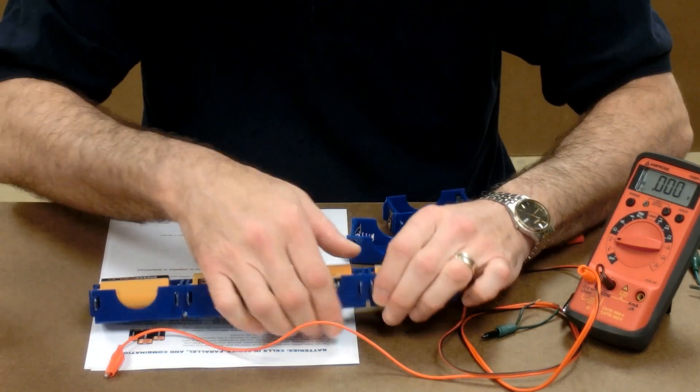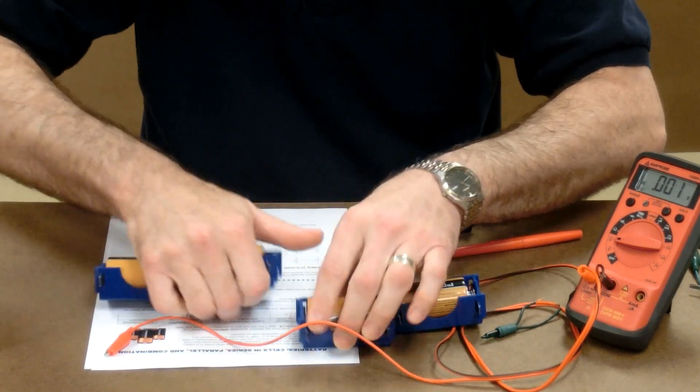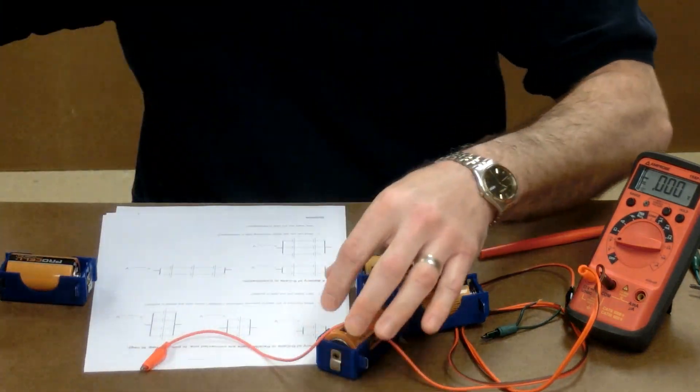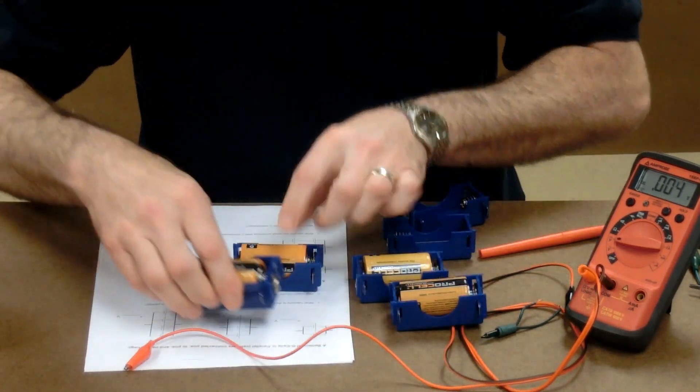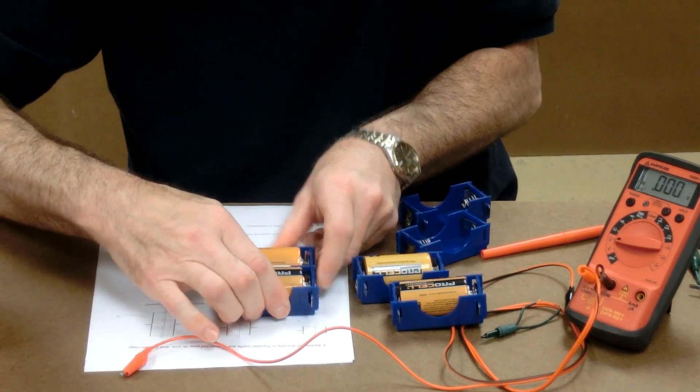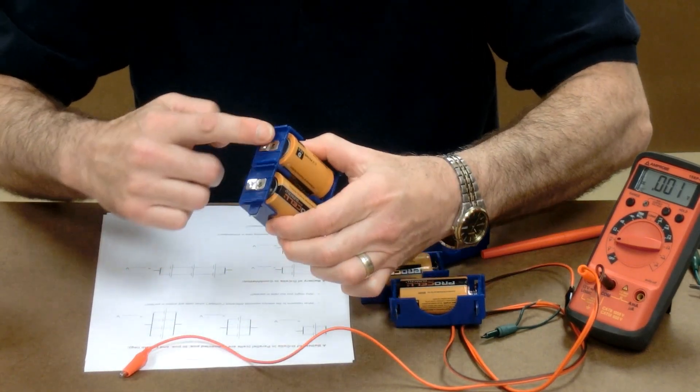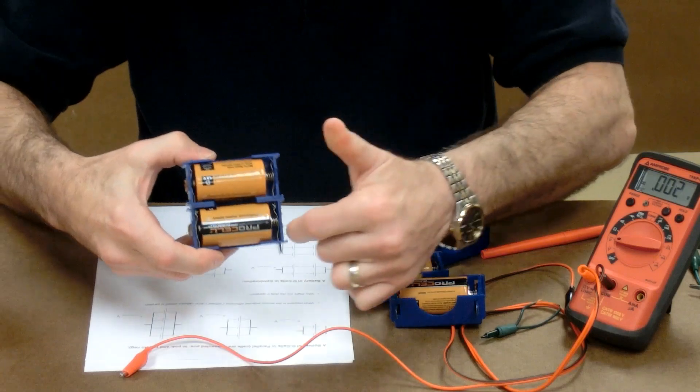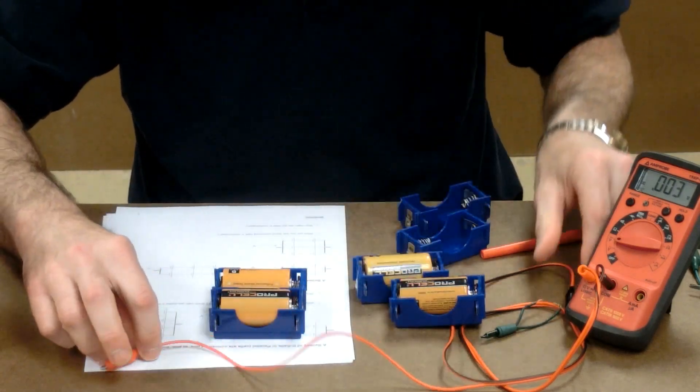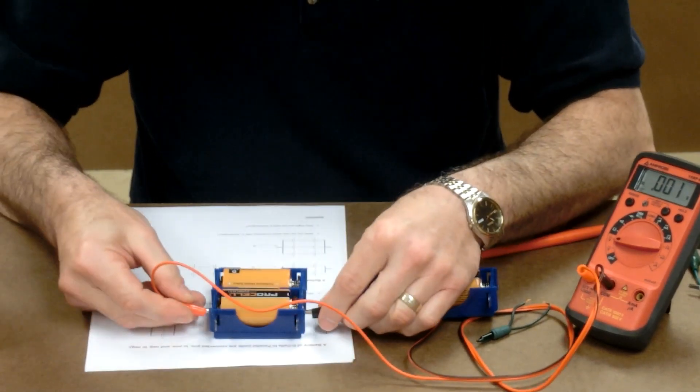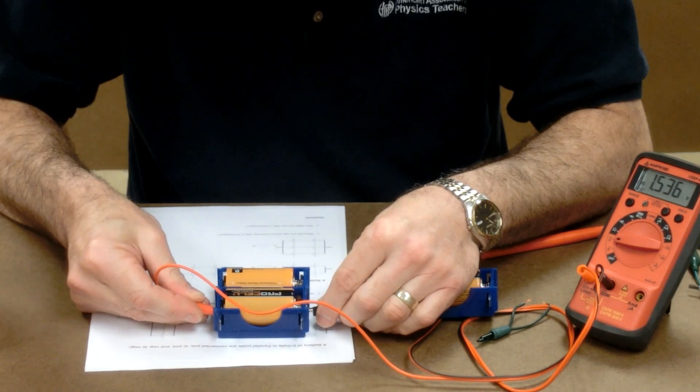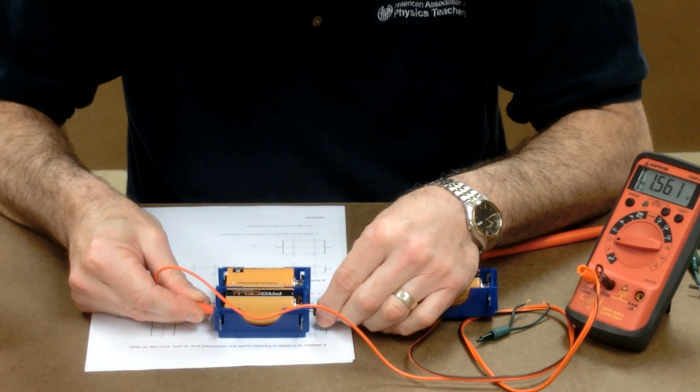We can also use these cell holders to put our cells in parallel. They'll snap together so that we have two cells in parallel. The positives are connected here, the negatives are connected here. When I put my meter on, I get 1.56 volts.